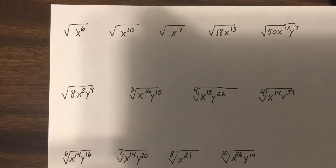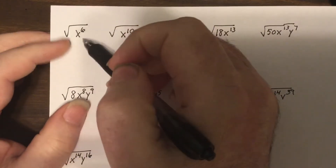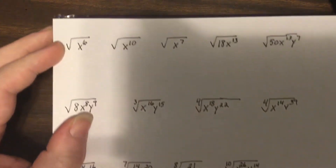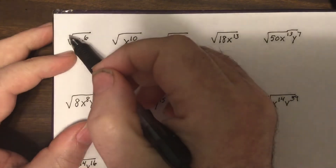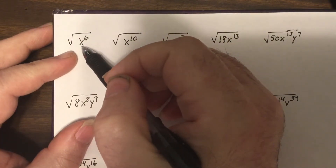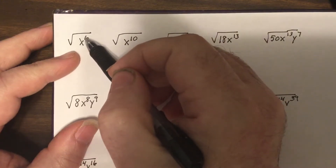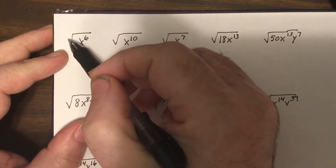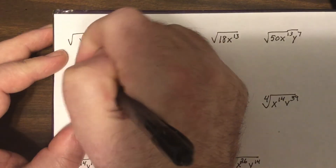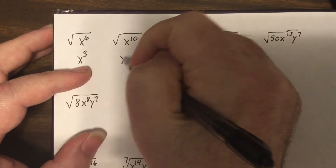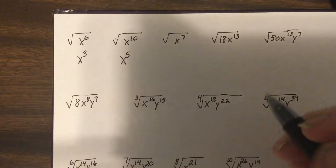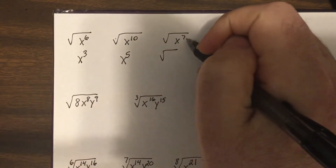What do we do when we have a variable underneath a radical? If we raise a base to a power to another power, the law of exponents says we multiply. But to reverse that — to take a square root — we divide the power by the index. So the square root of X to the 6th would be X cubed, and X to the 10th would give us X to the 5th.